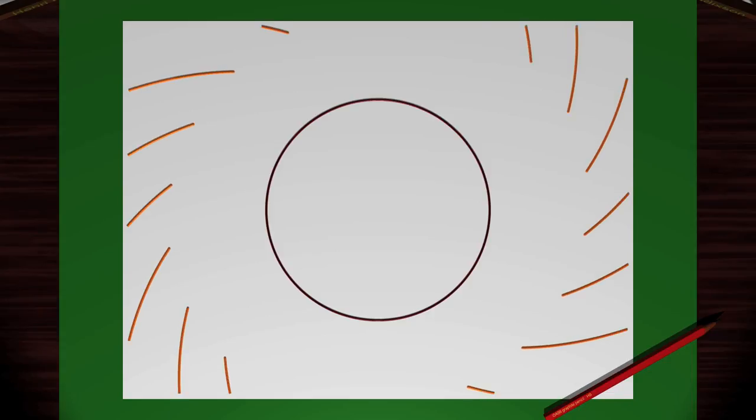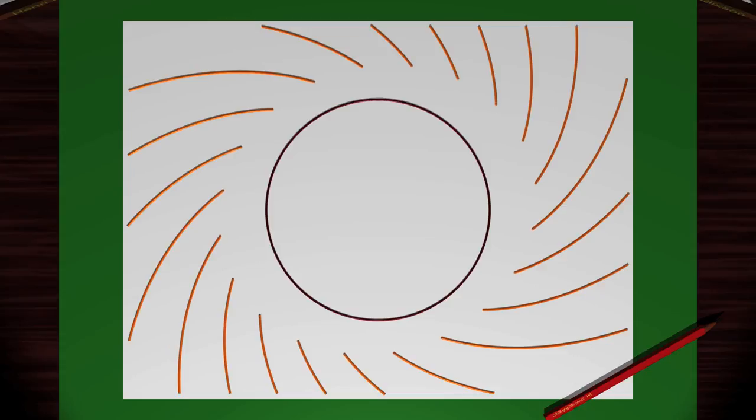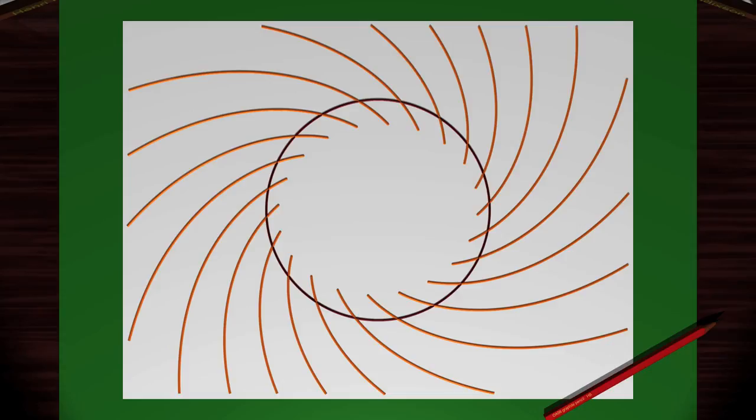Imagine a vector field that looks like this. In fact, we don't know the vector field everywhere, but we know how it behaves close to this circle. Take a trajectory that enters the disk. Where can it go?